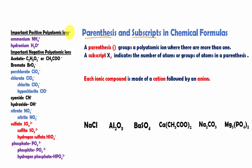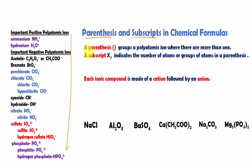Here I have a list of polytomic ions that we can reference, so we don't have to memorize them. So, let's go back to our topic, which is understanding how parentheses and subscripts are used in a chemical formula.